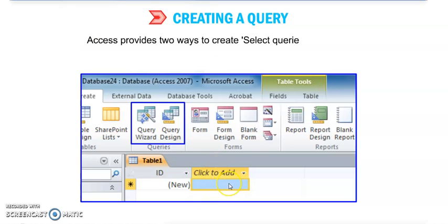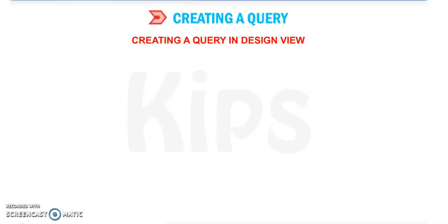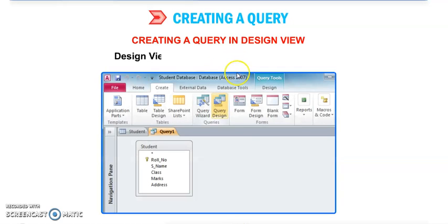Access provides two ways to create select queries: by using Query Wizard and Query Design. Two ways you can create a query. Now, creating a query in Design View.